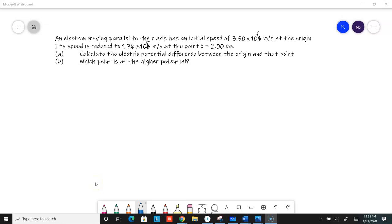Okay, so here is a problem. I believe this is also on your webassign. It says an electron moving parallel to the x-axis has an initial speed of 3.5 times 10 to the 6 meters per second at the origin.